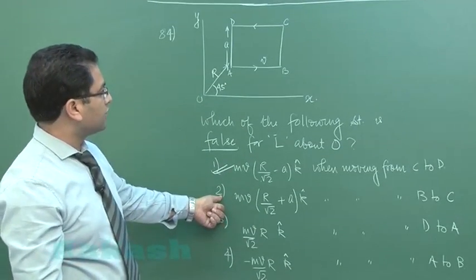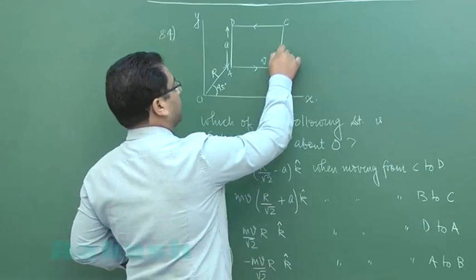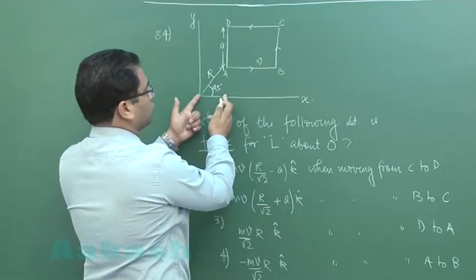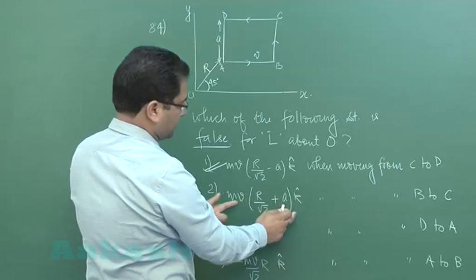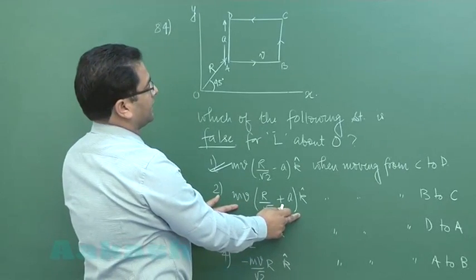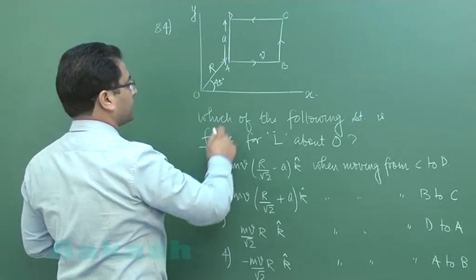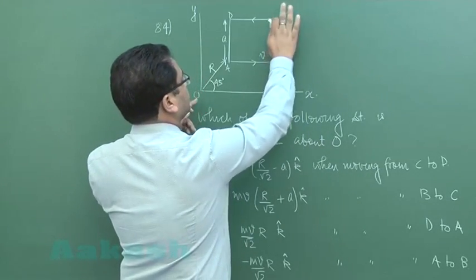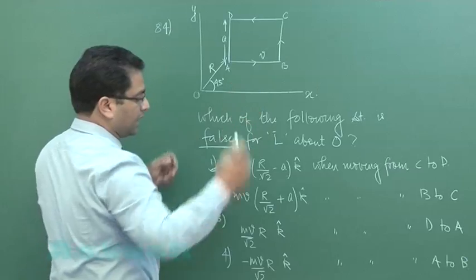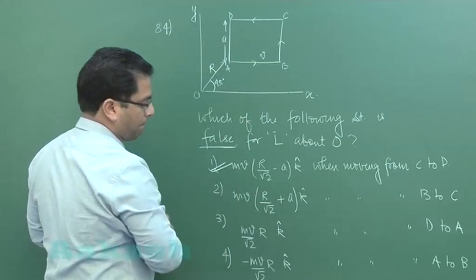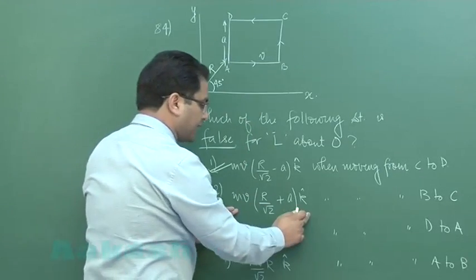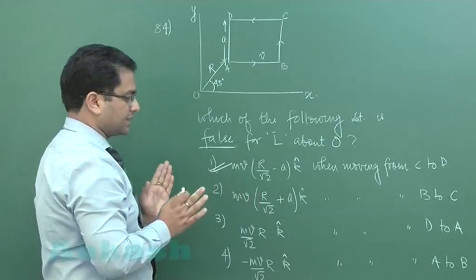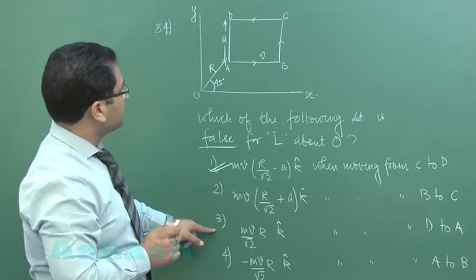Let us verify option number 2: from B to C the perpendicular distance is R by root 2 plus E so this magnitude part is right. Let us see the direction from B to C: R vector is here, momentum vector is here so R cross P would be outside which is K cap. So this is a right value, we will not be choosing this.